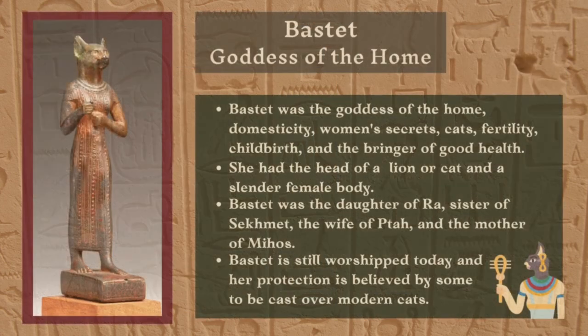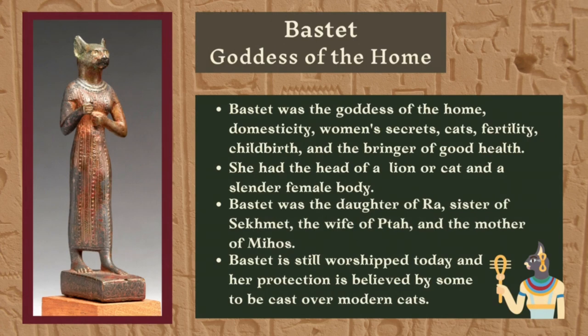Our Egyptian god we are depicting this month is the goddess Bastet. Bastet was the goddess of the home, domesticity, women's secrets, cats, fertility, childbirth, and the bringer of good health. She had the head of a lion, or more often a cat, and a slender female body.